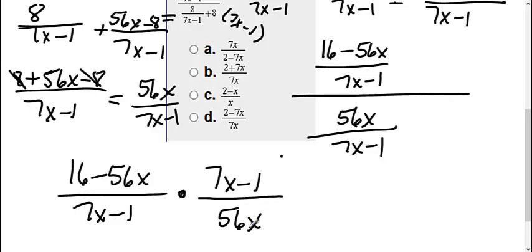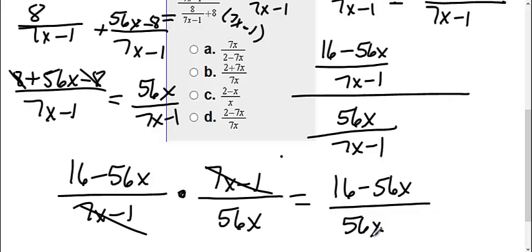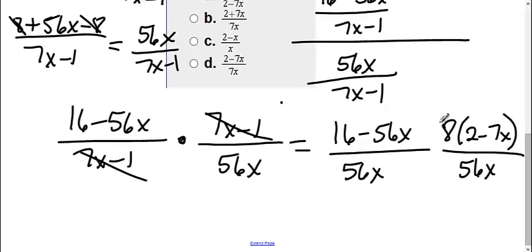Okay, then I can simplify. I have a 7x minus 1 here, 7x minus 1 here. And then I'm left with 16 minus 56x all over 56x. But I'm not done because I can still simplify here. I can pull out this 8. I have 8 times 2 minus 7x over 56x. Then 8 goes into 8 once, 8 goes into 56 seven times. So my final answer is 2 minus 7x over 7x, which is choice D.